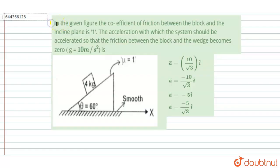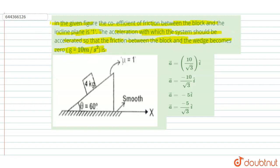Hello, welcome to DoubtNet. In this question, in the given figure, the coefficient of friction between the block and the inclined plane is 1. The acceleration with which the system should accelerate so that the friction between the block becomes 0, and the value of g is equal to 10 m/s². This is the figure: a 4 kg block on an inclined plane at 60 degrees, with mu equal to 1.